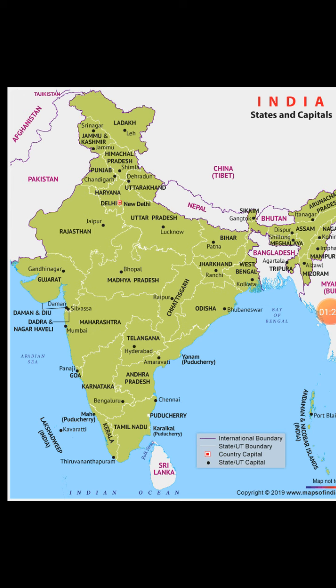All the union territories have been discussed. Now we will discuss the Indian states and their capitals, starting from the northernmost side. Jammu and Kashmir and Ladakh are now considered union territories, no more states. Himachal Pradesh has its capital Shimla. Punjab and Haryana share the capital Chandigarh. Uttarakhand's capital is Dehradun.